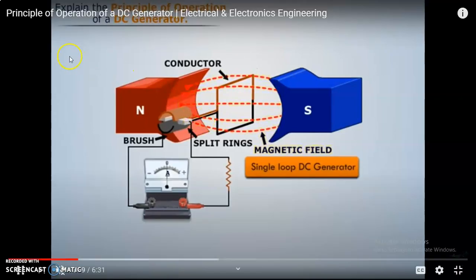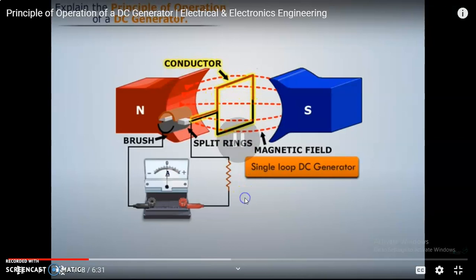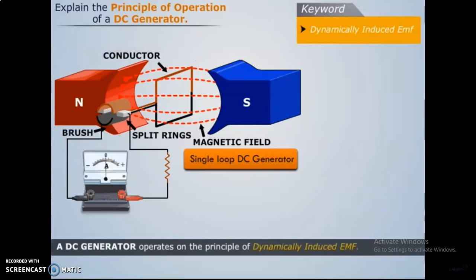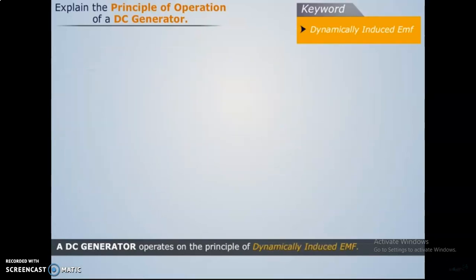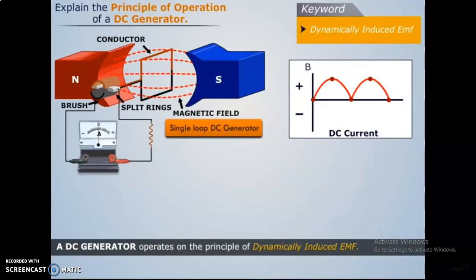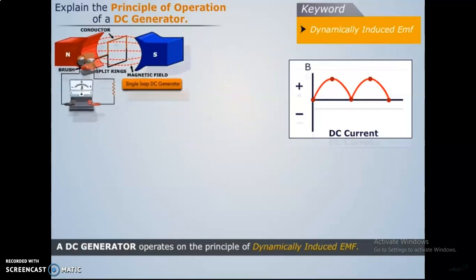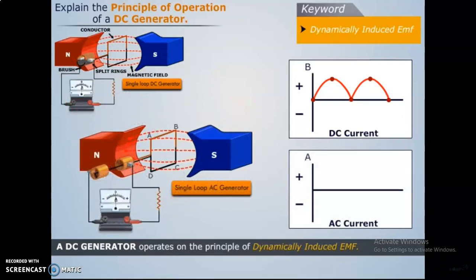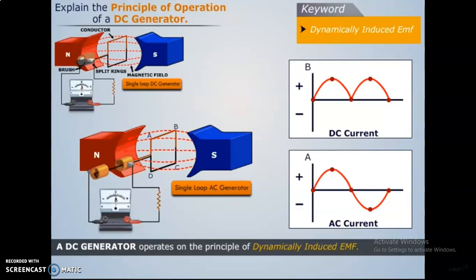The conductor is between the permanent magnets, so automatically there will be an induced EMF. It is connected to the split rings, which are connected to the brushes. Due to that, there will be a dynamically induced EMF. According to the rotation, you have the waveform — this is your DC current. How the split rings connected with the conductor change: when the conductor revolves, the polarity connected to the split rings also changes. That is how we get the AC current.